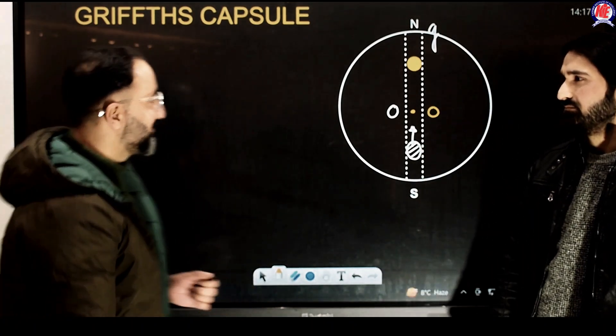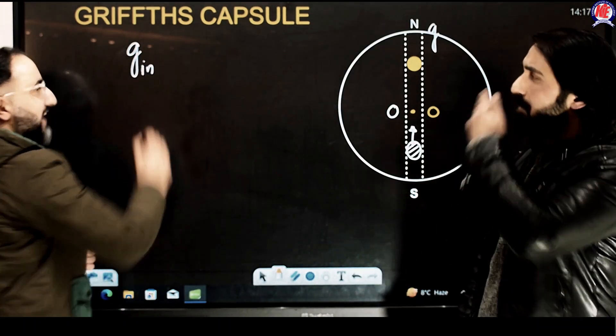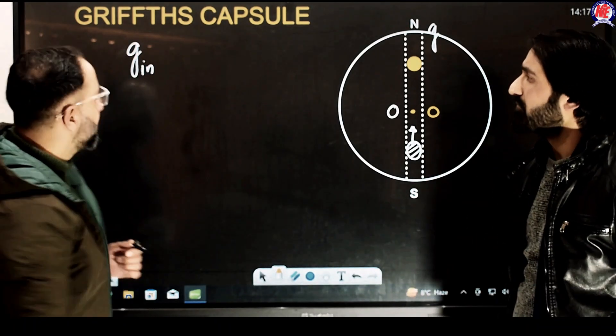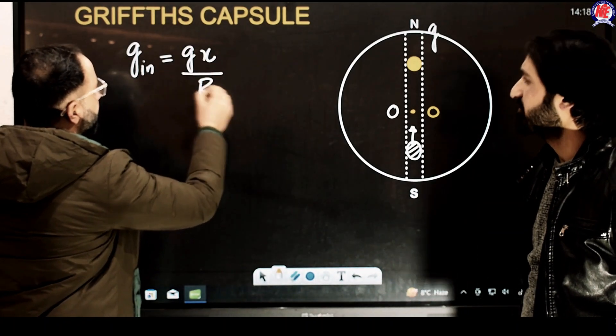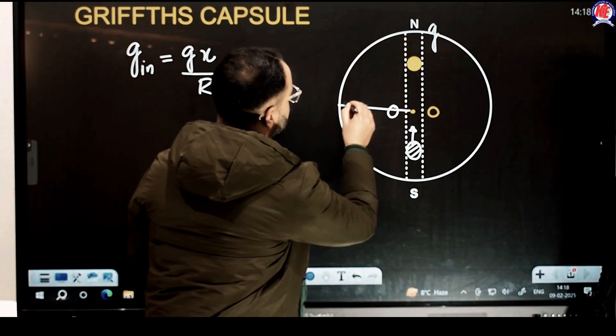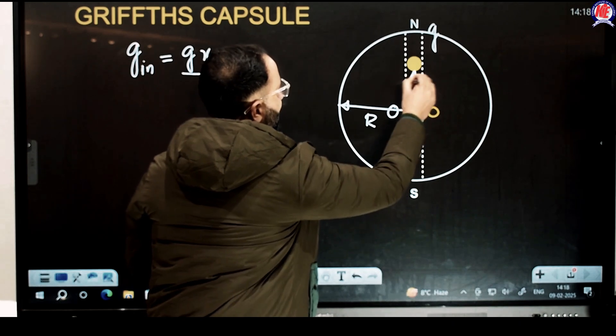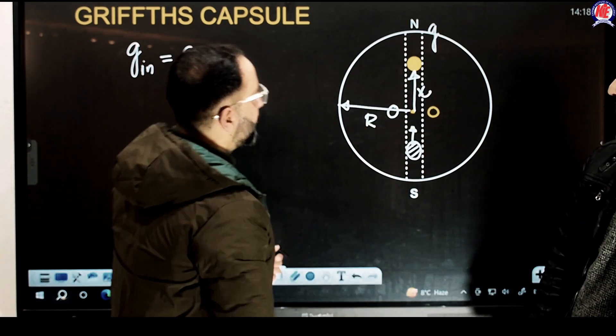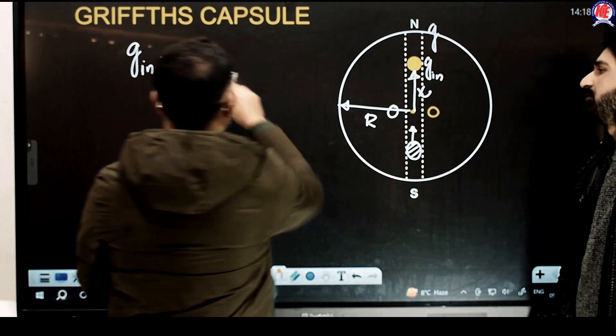So what I am going to write is this. I will write an equation like this: g inside, this is the acceleration due to gravity inside, that will be equal to g into x divided by r. While r is the radius of earth, this is the radius of earth which is equal to r. And x is any distance from the centre. So acceleration due to gravity at this very point which is g inside will be this.